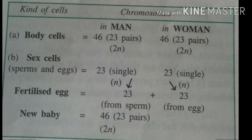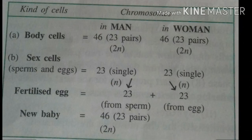For example, in human beings, parent cells have 23 pairs of chromosomes, but sperm cells have 23 chromosomes and egg cells also have 23 chromosomes.